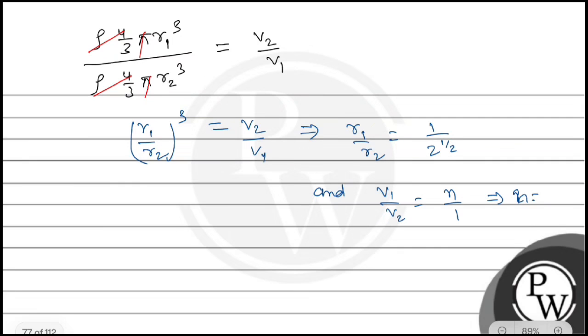So from here, the value of r1 by r2 is 1 by 2 to the power 1 by 3. Now putting r1 by r2 value here, we get 1 by 2 to the power 1 by 3 whole cube, that is 1 by 2, equals v2 by v1.